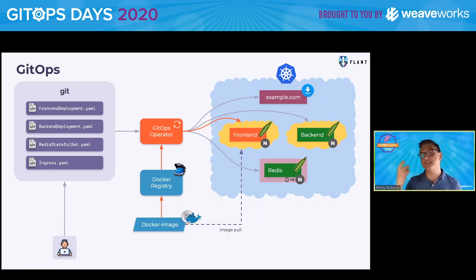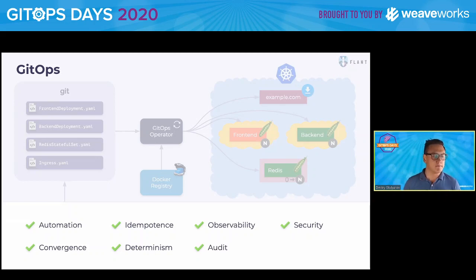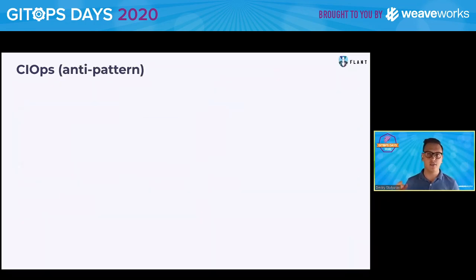That's kind of the basic of the basics. And of course we have a lot of exciting, beautiful, perfect things, and specifically determinism and idempotency are probably the most important — at least I feel that way. So what I compare GitOps with is mainly the thing that is called CIOps. I know that WeaveWorks calls it CIOps, and it's basically the antipattern for GitOps.